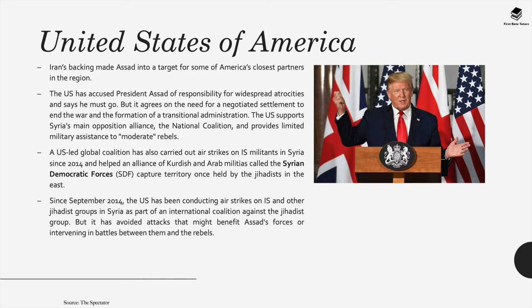The United States is another major country involved in opposing Bashar al-Assad's regime. Iran's backing made Assad a target for some of America's closest partners in the region. The US has accused President Assad of responsibility for widespread atrocities and says he must go, but agrees on the need for a negotiated settlement and the formation of a transitional administration. The US supports Syria's main opposition alliance, the National Coalition, and provides limited military assistance to moderate rebels.